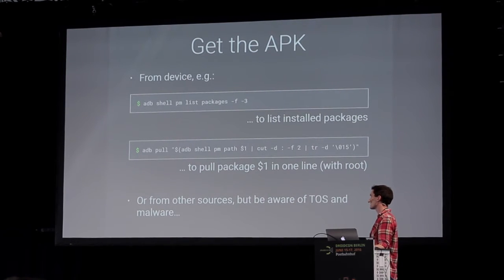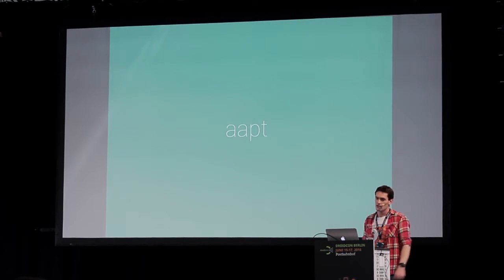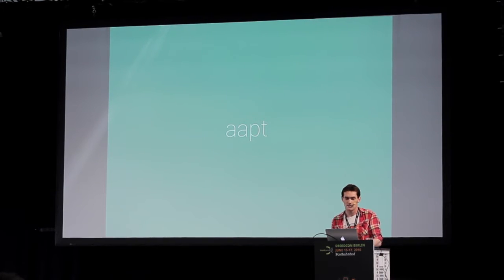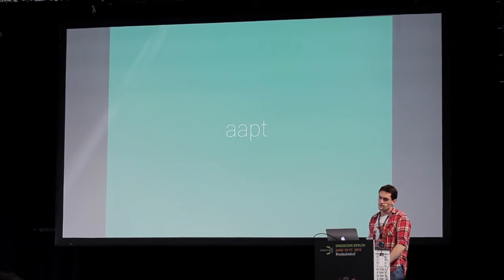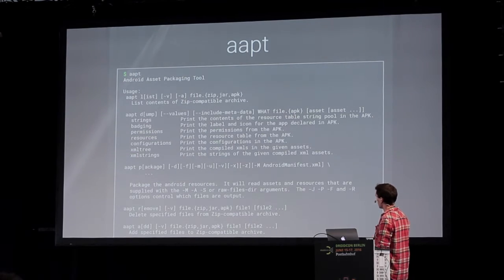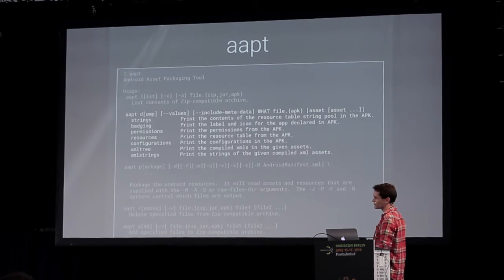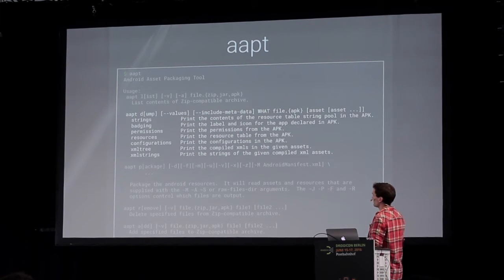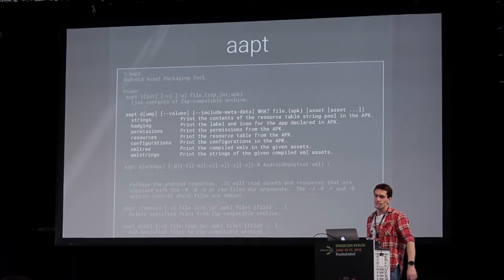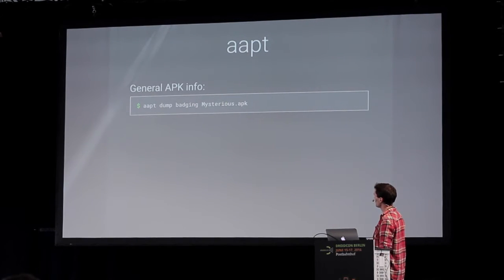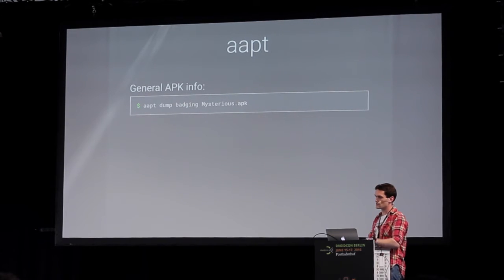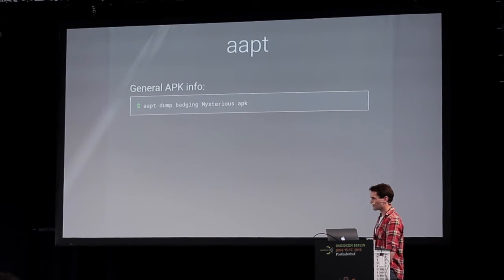Once you pull it onto your computer, the first thing you probably want to do is use AAPT. This tool is part of the Android SDK - you already have it on your machine if you've developed apps. It does a huge amount. This is all the stuff it does. But the part of interest when you want to have a quick look at an app - what is this app, what does it do, what permissions has it got - is here. With this tool you can dump things out of the APK. You can dump the badging, which gives you a top-level view of the application: permissions, activities, configurations, and so on.